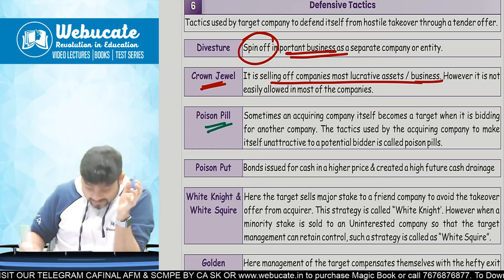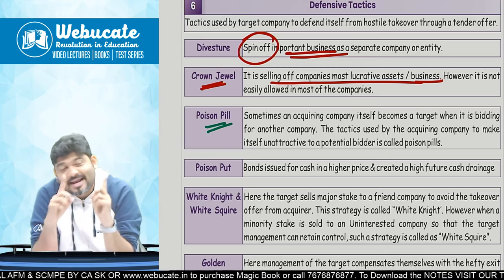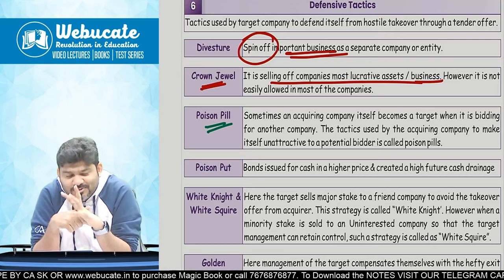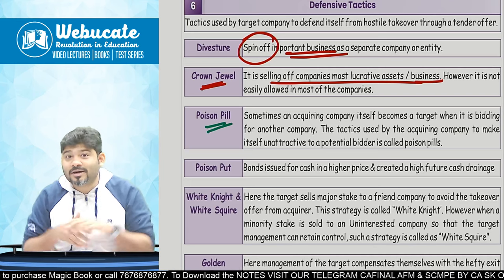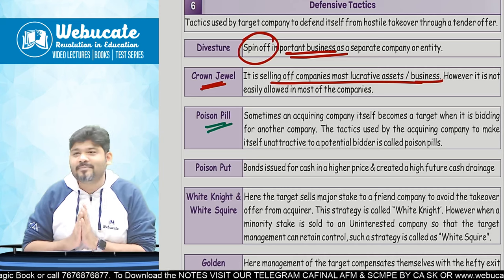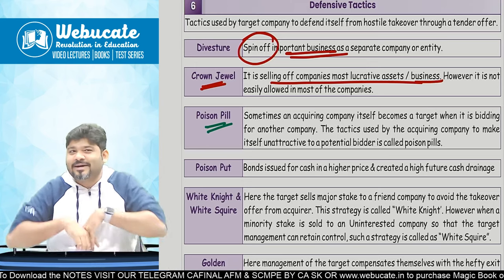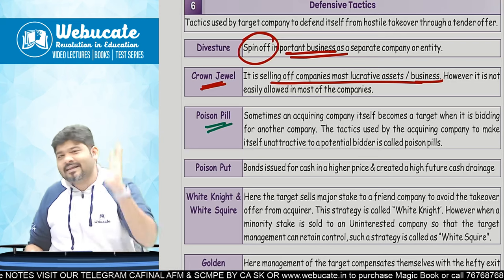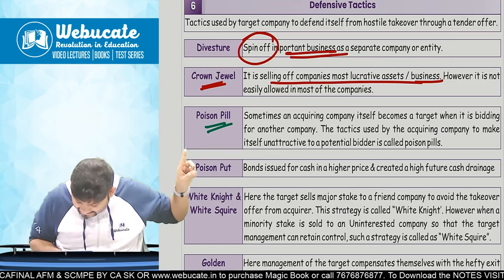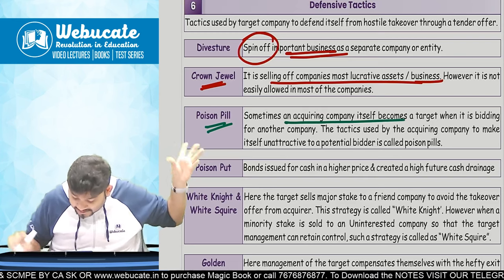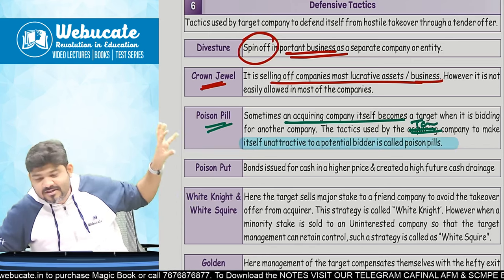Then is Poison Pill — making yourself unattractive. This is what Twitter tried when Elon Musk was trying to acquire it. The tactics used by the target company to make itself unattractive to a potential bidder is called Poison Pill. Then comes Poison Put — companies issue convertible bonds. If an acquirer takes over the target, those bonds will convert at a future date, resulting in massive equity dilution or cash outflow, which may deter the acquirer. Bonds are issued for cash at a higher price, creating a higher future cash drainage.